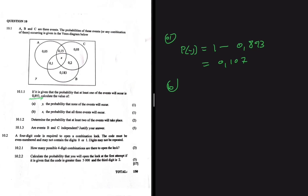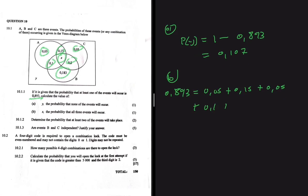Now for part b, we calculate the value of X — the probability that all three events will occur. We know that the probability of at least one event occurring is 0.893, so all the probabilities in the Venn diagram must sum to 0.893. Setting up the equation: 0.893 equals 0.05 plus 0.15 plus 0.05 plus 0.1 plus 0.2 plus 0.183 plus X.